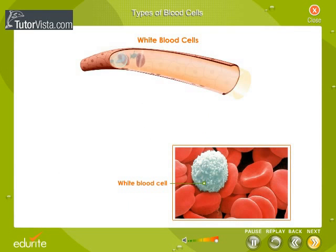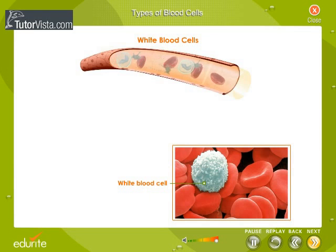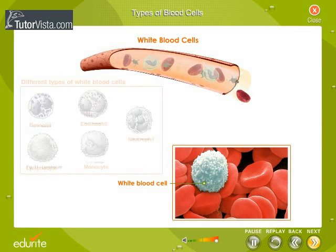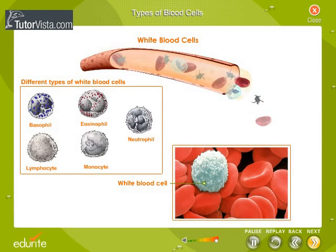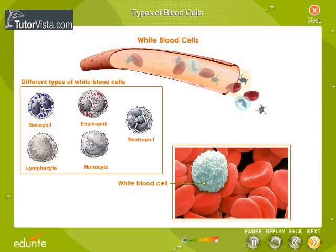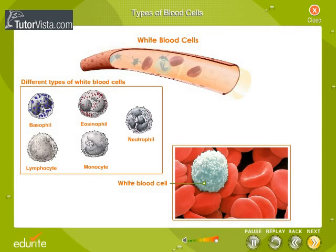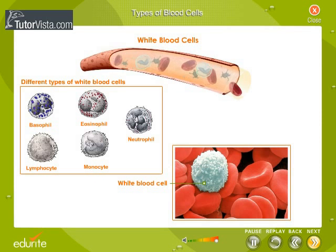White blood cells make up about 1% of blood volume. They are larger than red blood cells, and different types of WBCs can be seen in our blood. Unlike red cells, they are nucleated and independently mobile. They can assume irregular shapes due to amoeboid movement.